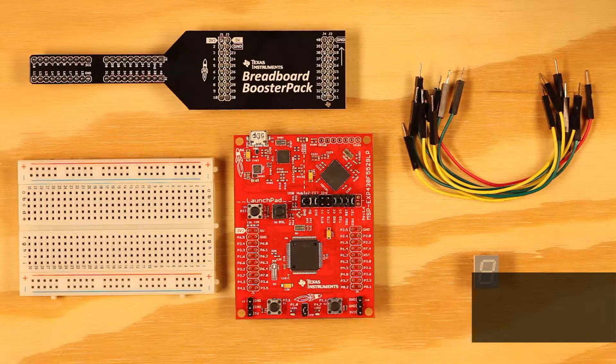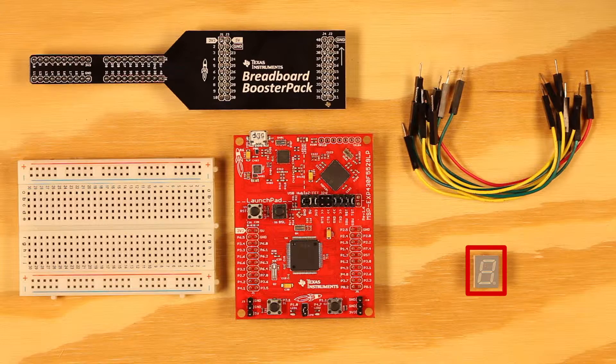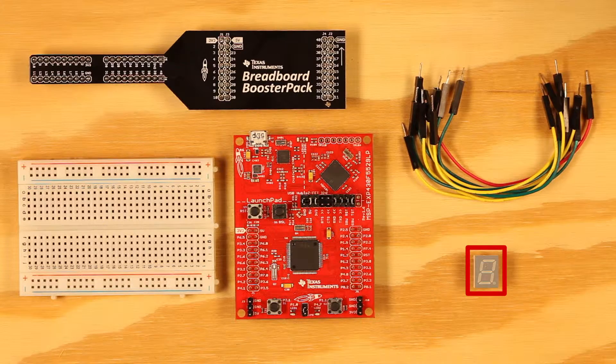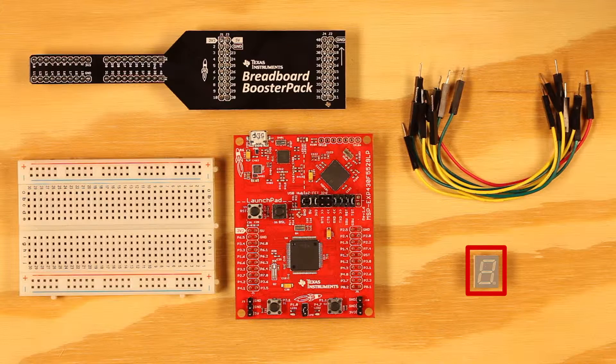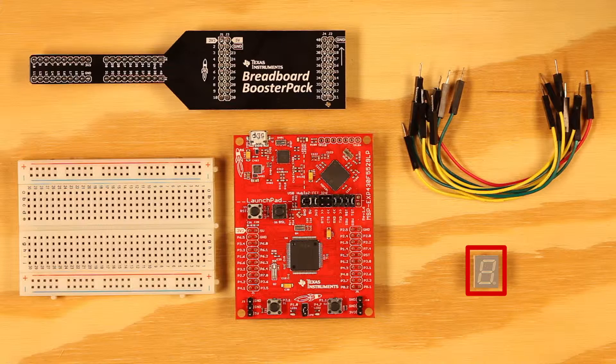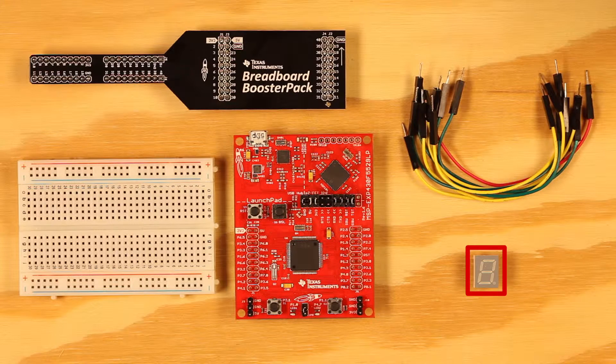In example 10, we're going to use a 7-segment display to display numbers. Displays are very important for relaying human-readable information in an electronic system. Displaying digits is useful in many types of projects, such as control panels, calculators, sensor arrays, and more.